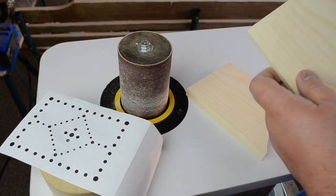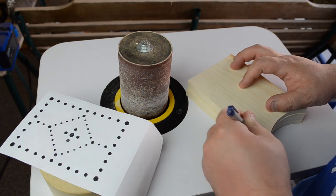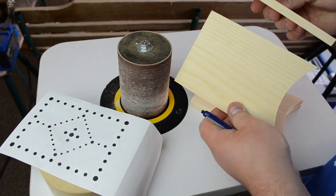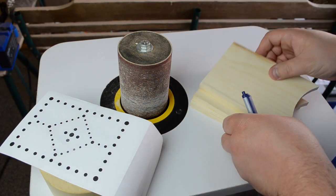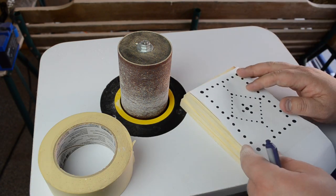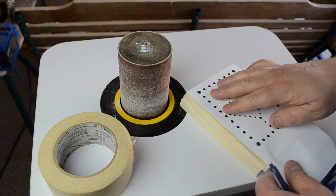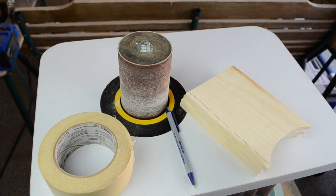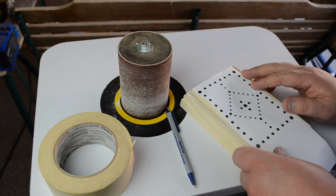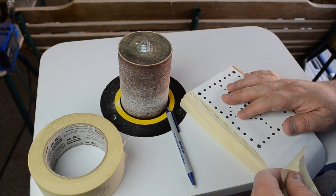I then stacked all four pieces and drew a line from the edge three eighths of an inch in. The paper template then gets centered between the far right edge and the line. If this is a project you want to make, I'll have a free template at nickferry.com.